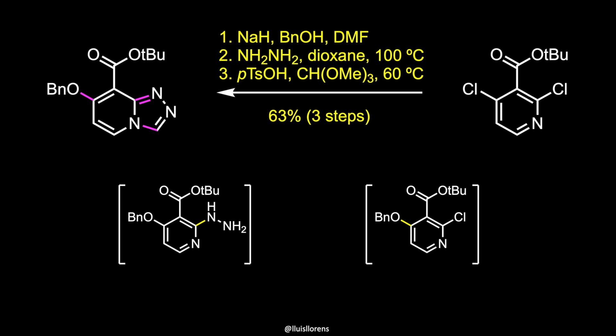In general terms, pyridines undergo nucleophilic aromatic substitution usually faster at C4 than C2 or C6, but it is highly dependent on the nucleophile and the conditions employed.